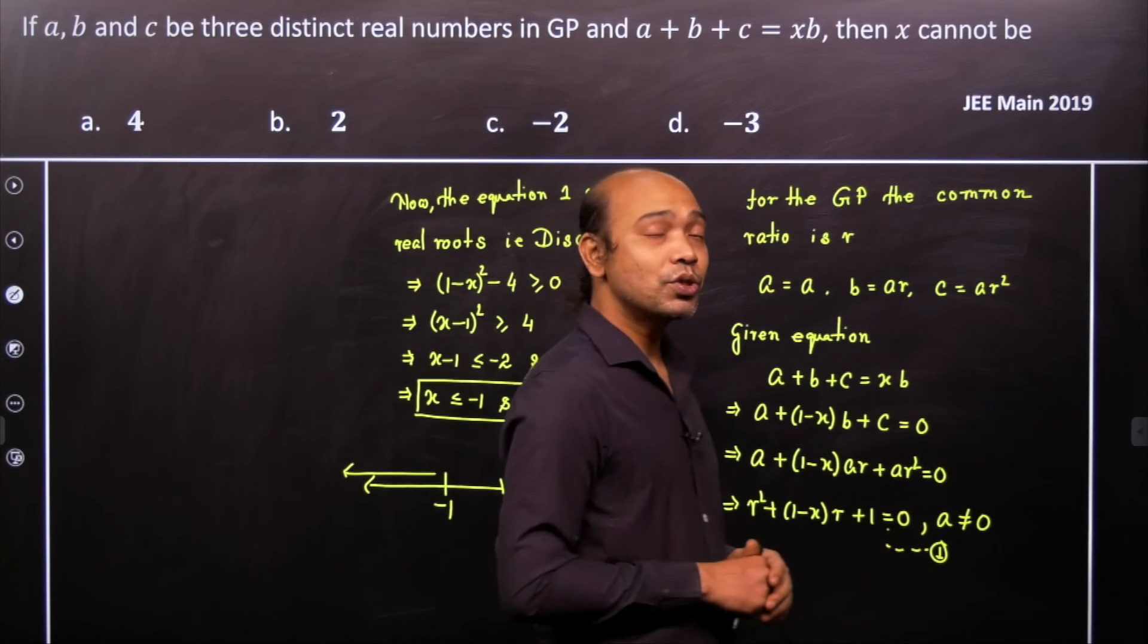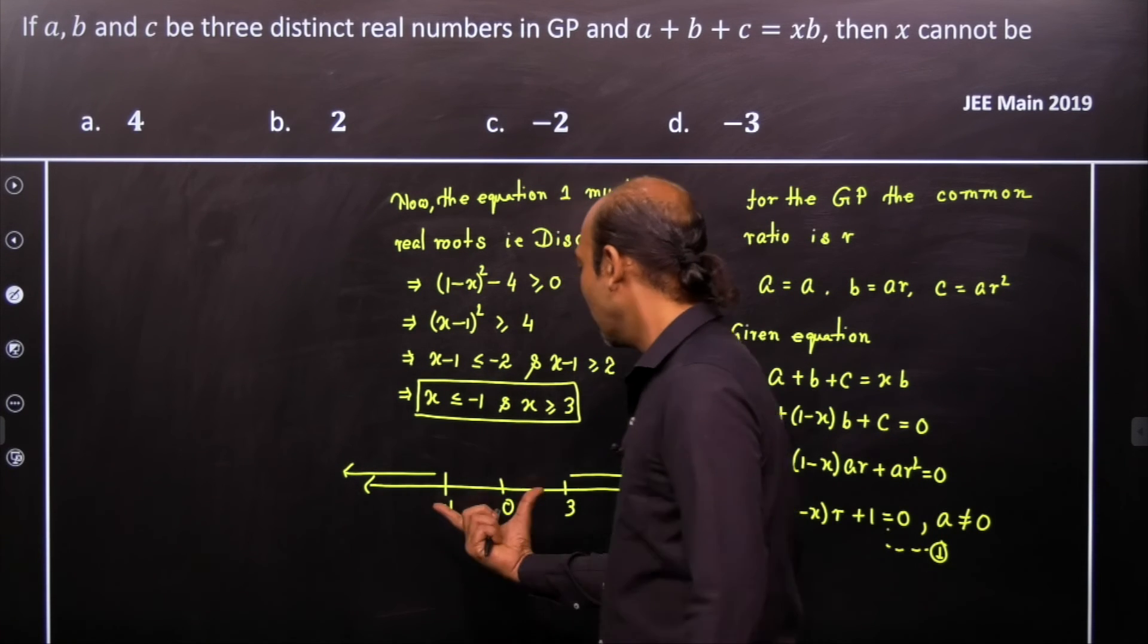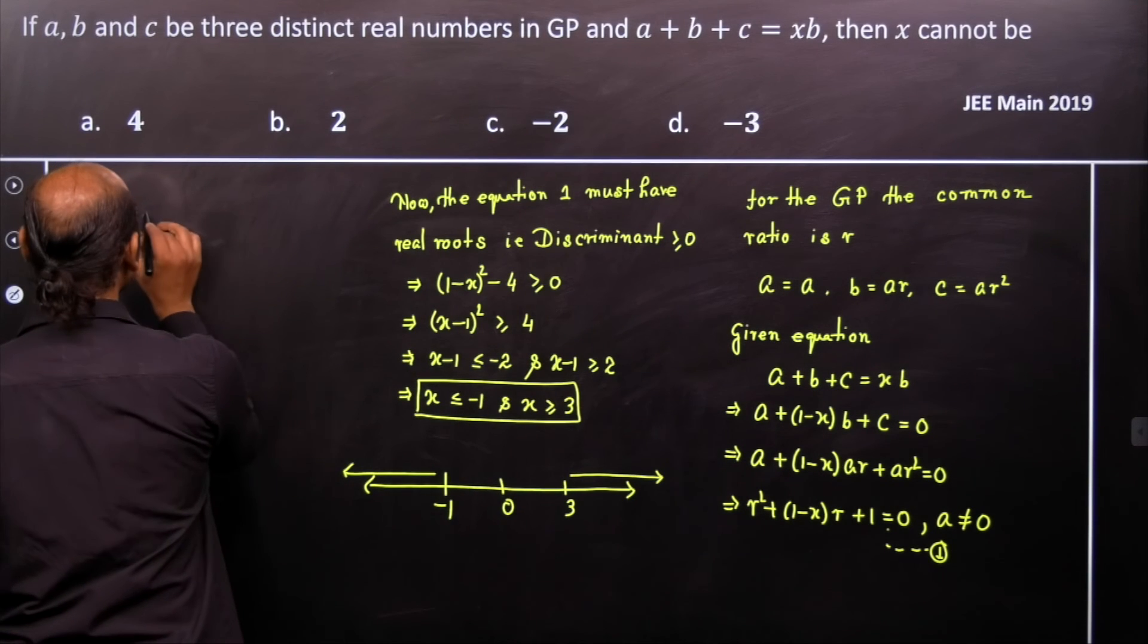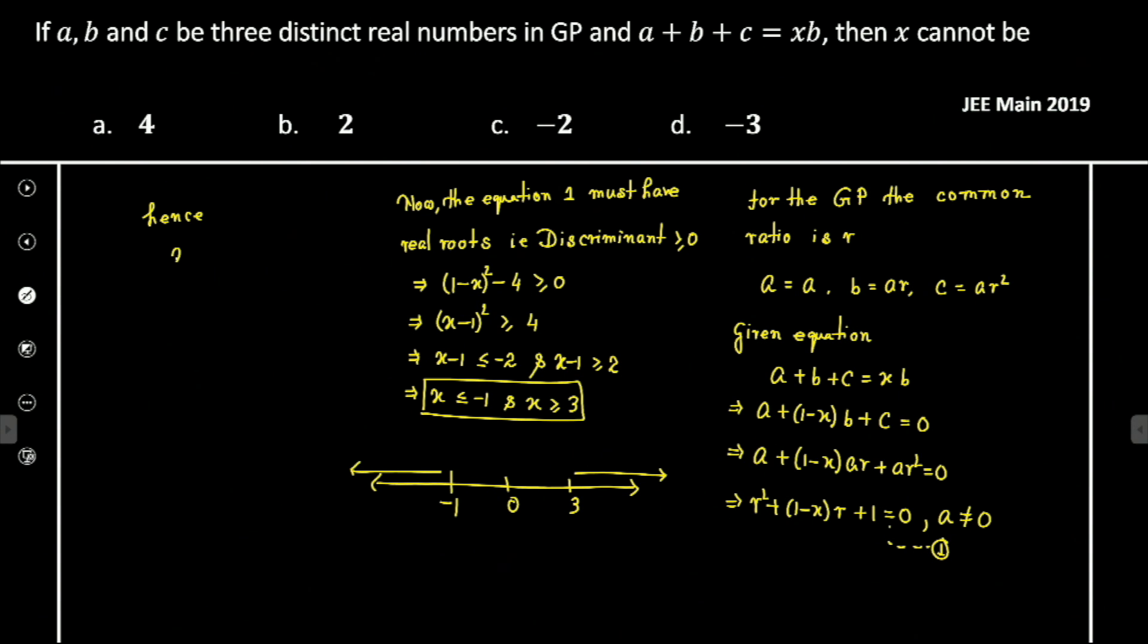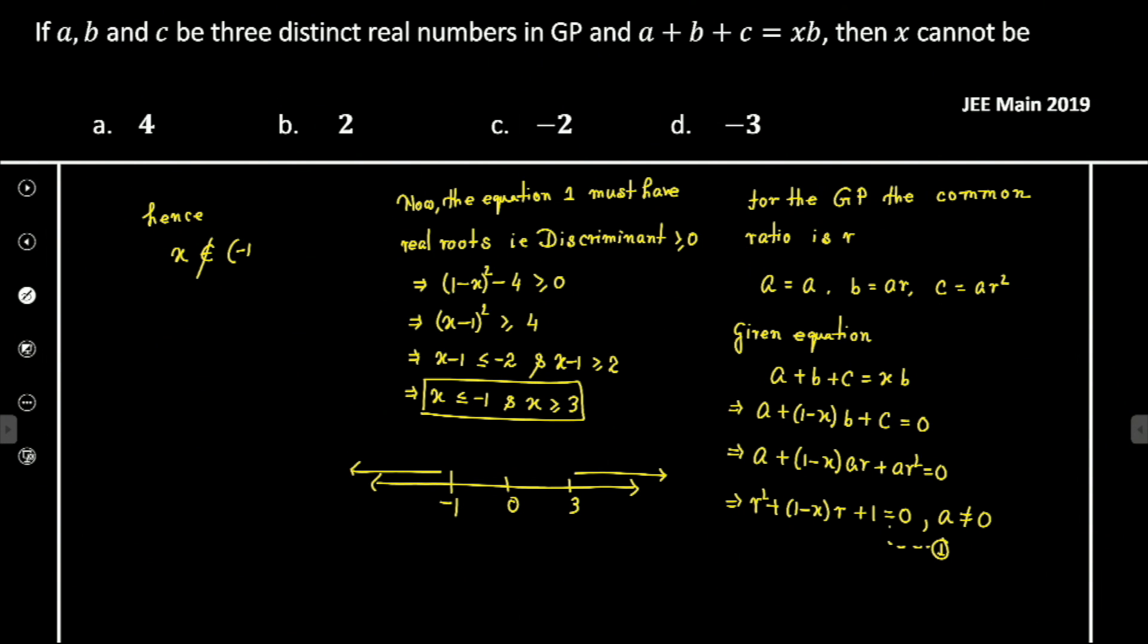If x lies in these regions, then the equation will have real roots and a real value of r. So where can x not be? x cannot belong to the region between -1 and 3. Therefore, x cannot belong to the open interval (-1, 3).